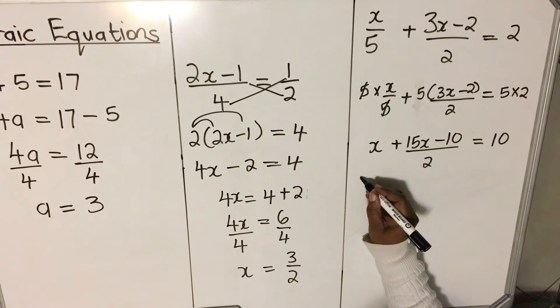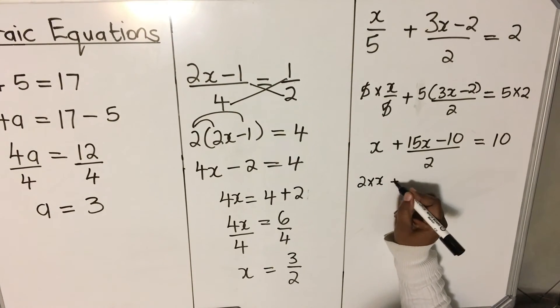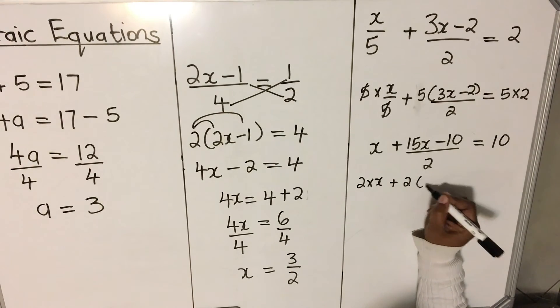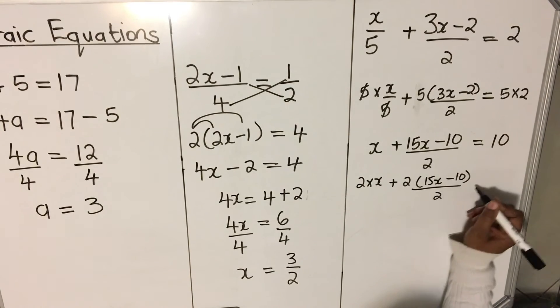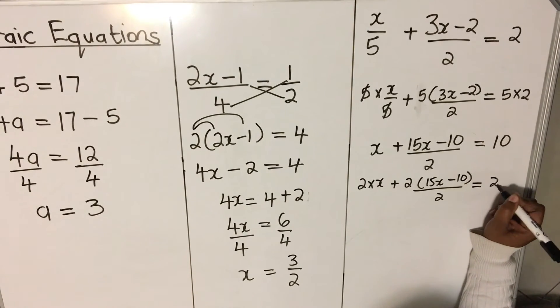So this will be 2 times x for the first term plus 2 times x minus 10 over 2 for the second term. Equals to 2 times 10.